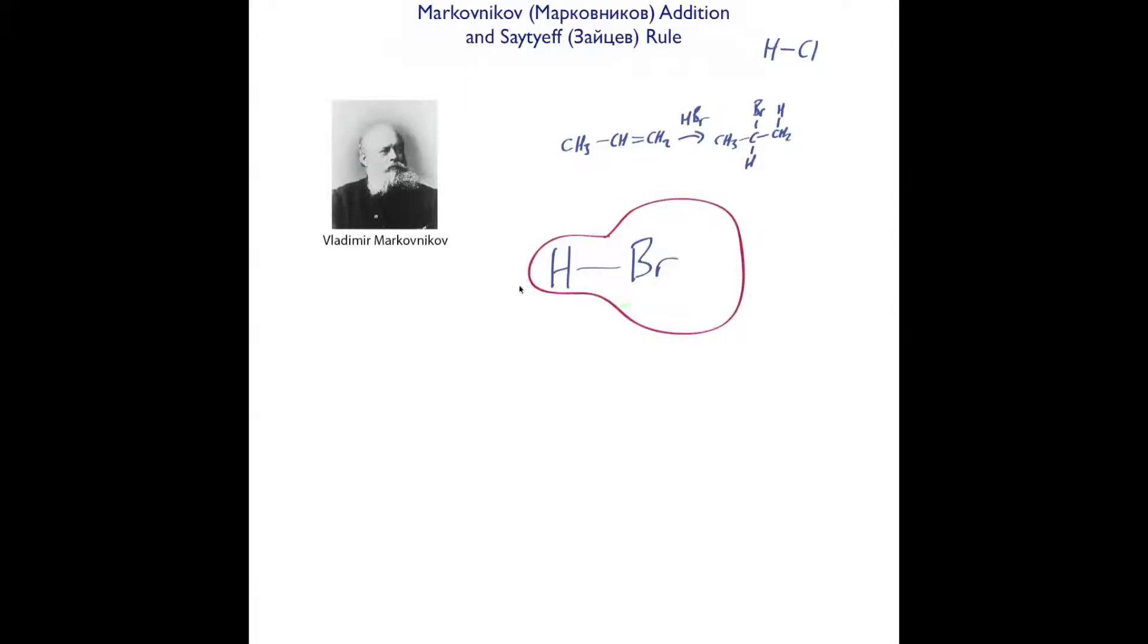This gives the proton a slightly positive charge and bromine a slightly negative charge. That character, if you've never seen it before, is called delta - it's a Greek letter meaning 'a little bit'. So it's a little bit positive and a little bit negative. Overall it's neutral, but this is slightly positive and this is slightly negative.